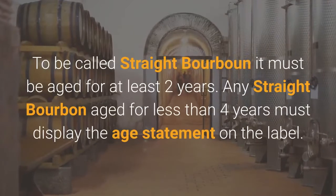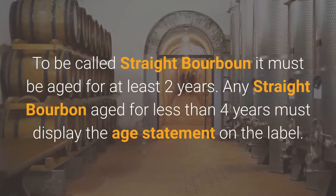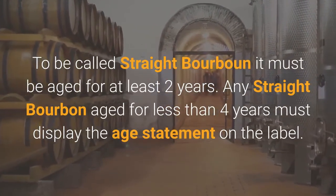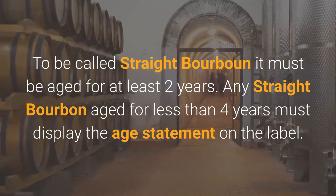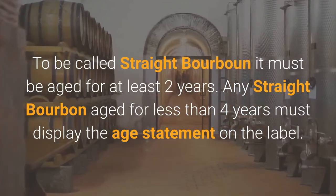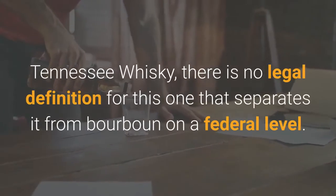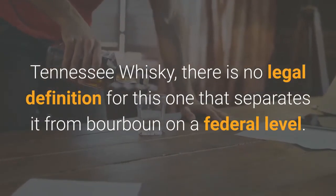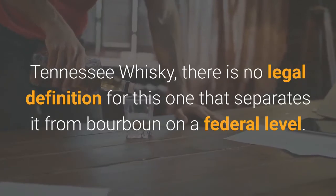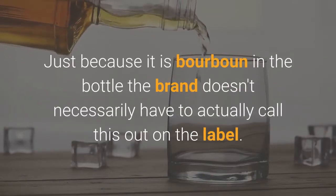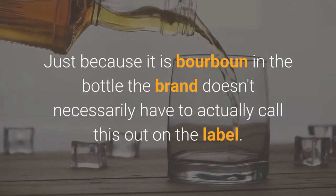To be called straight bourbon it must be aged for at least two years. Any straight bourbon aged for less than four years must display the age statement on the label. Tennessee Whisky has no legal definition on a federal level that separates it from bourbon — just because it is bourbon in the bottle, the brand doesn't necessarily have to call this out on the label.